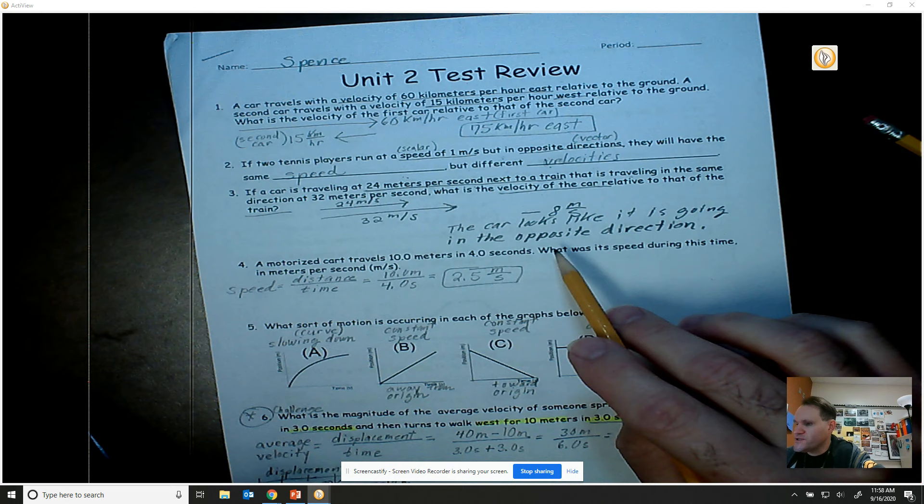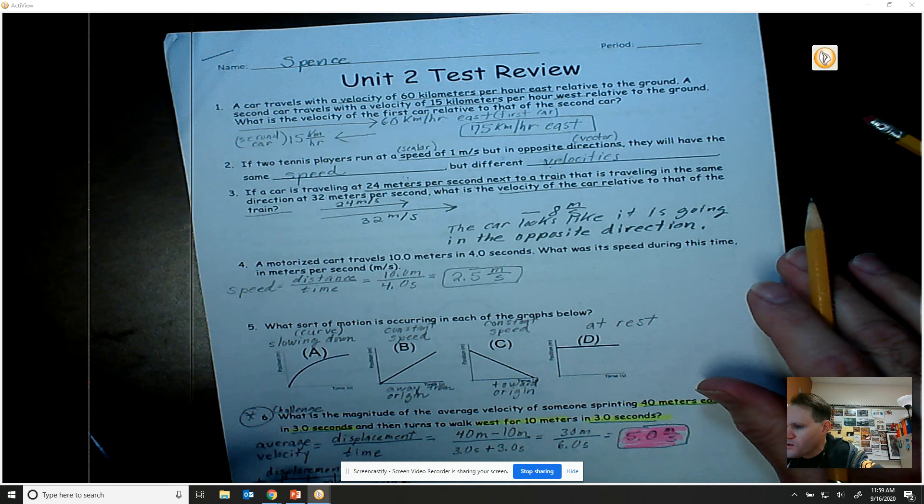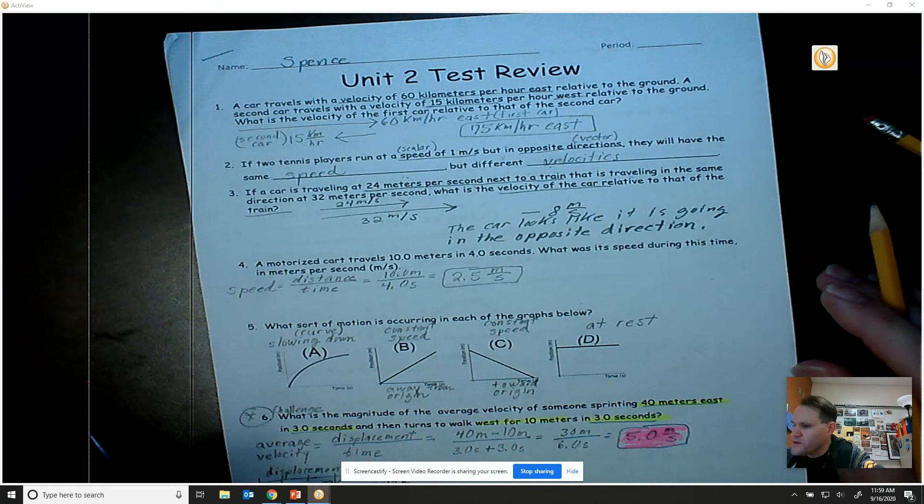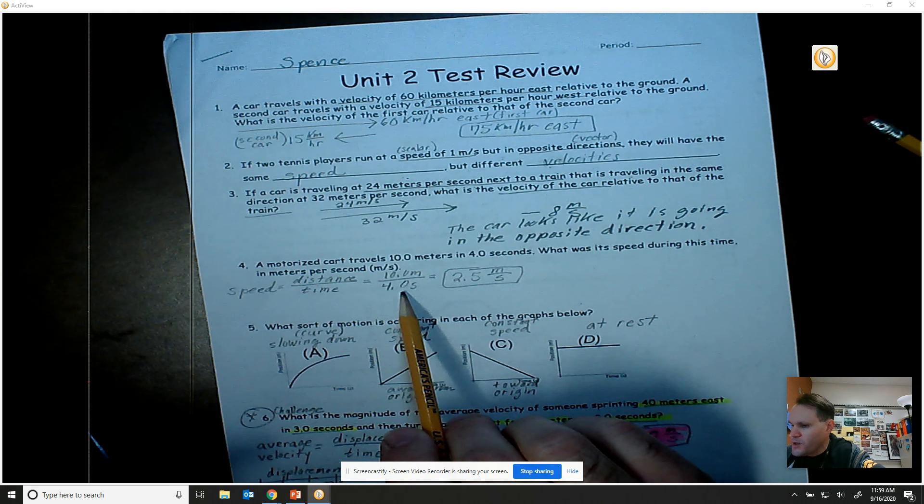Number four: a motorized cart travels 10 meters in four seconds. What is its speed during this time in meters per second? Guys, you'll probably see no easier problem than this one, because speed is simply the distance divided by the time. Distance of 10 meters divided by a time of four seconds will give you a speed of 2.5 meters per second.